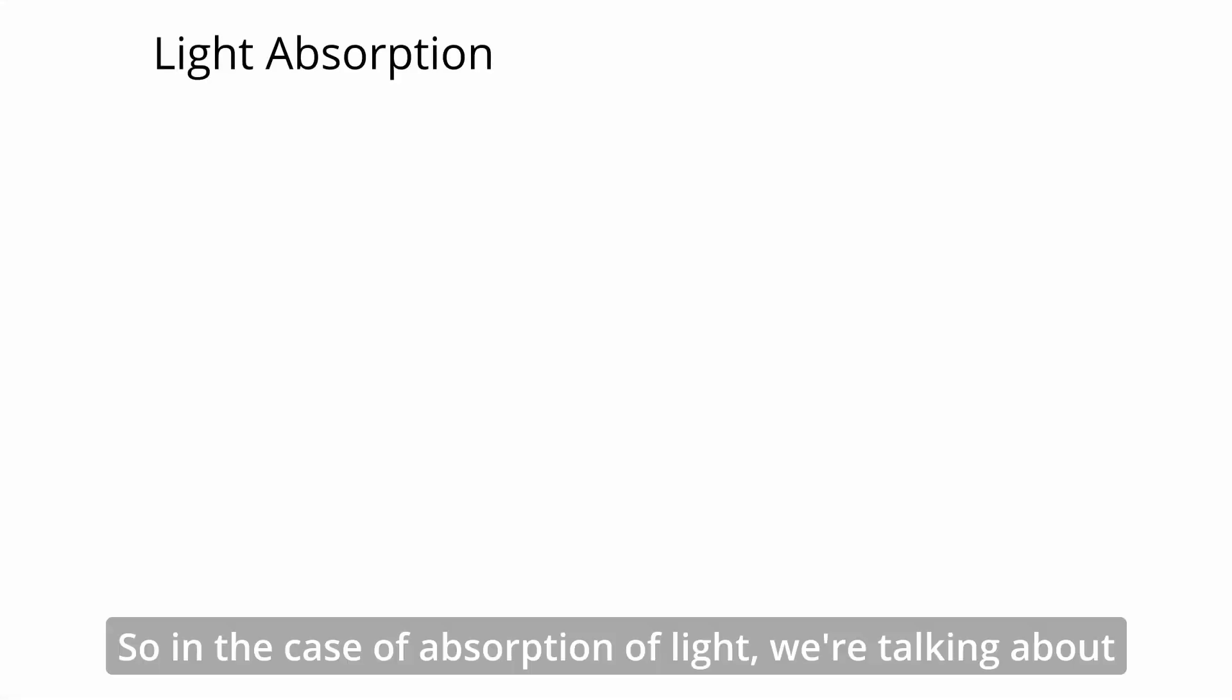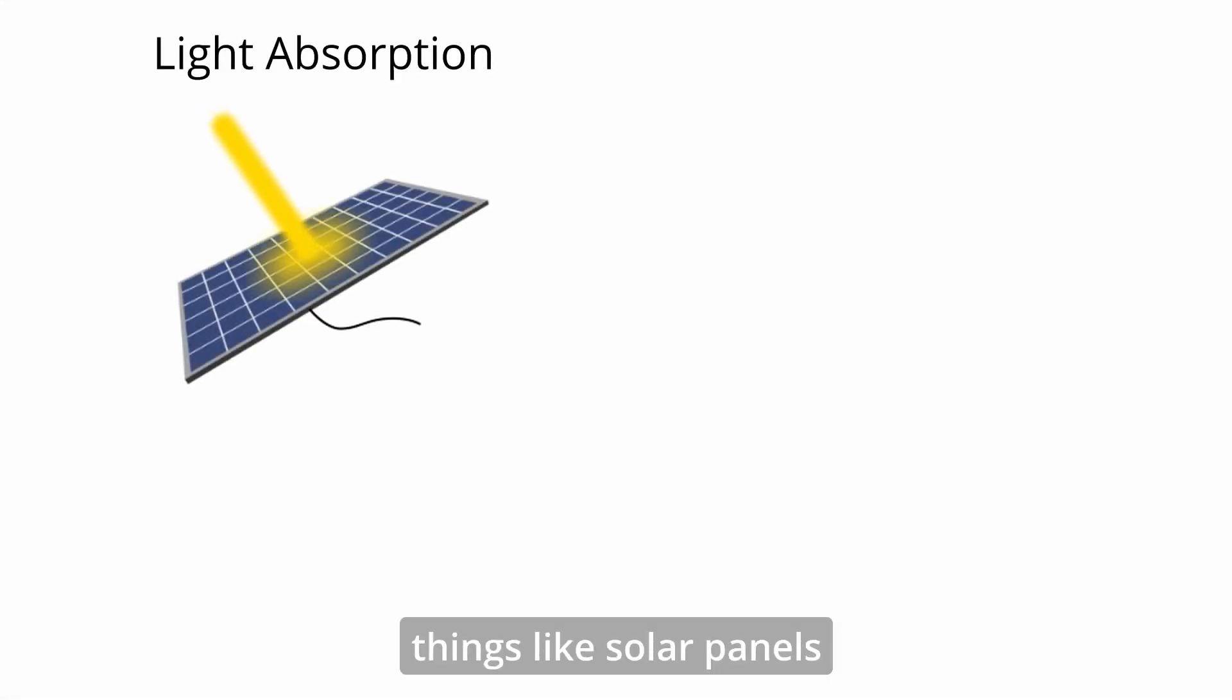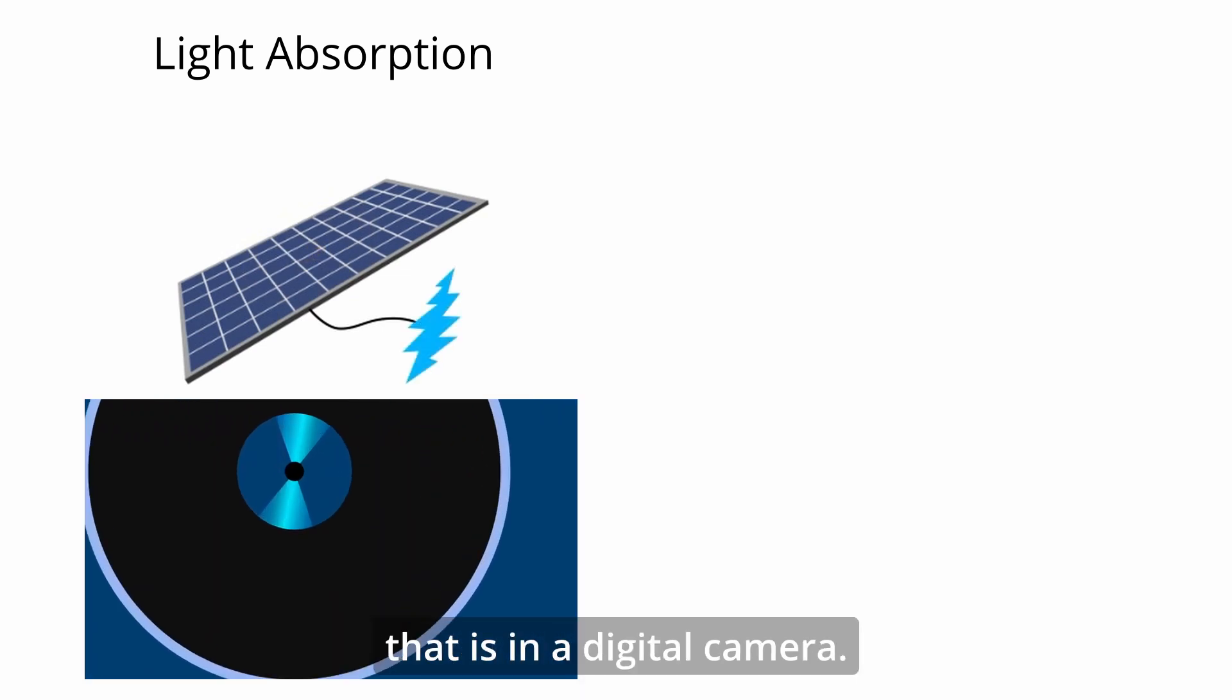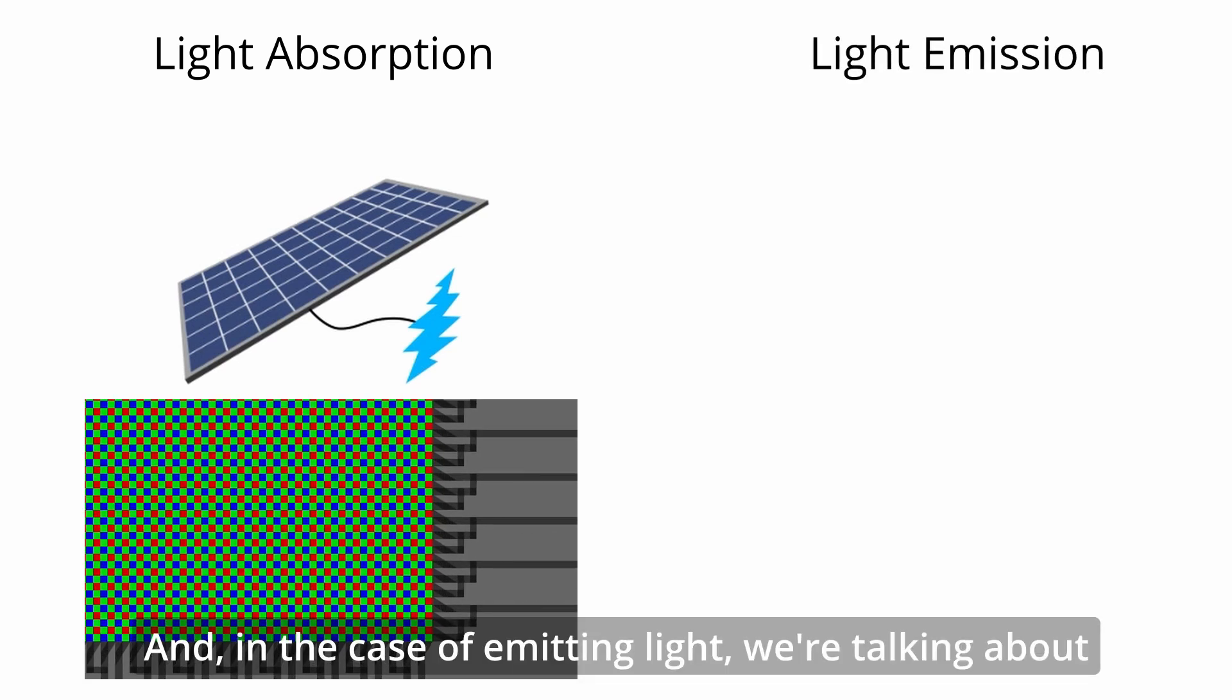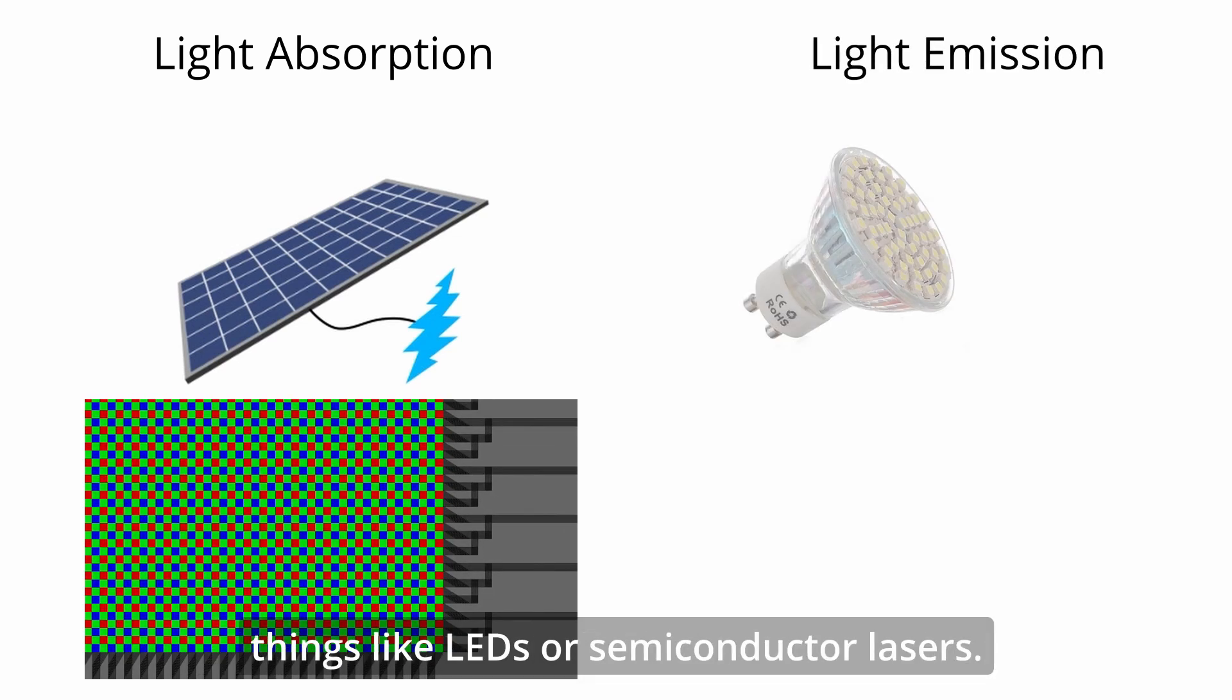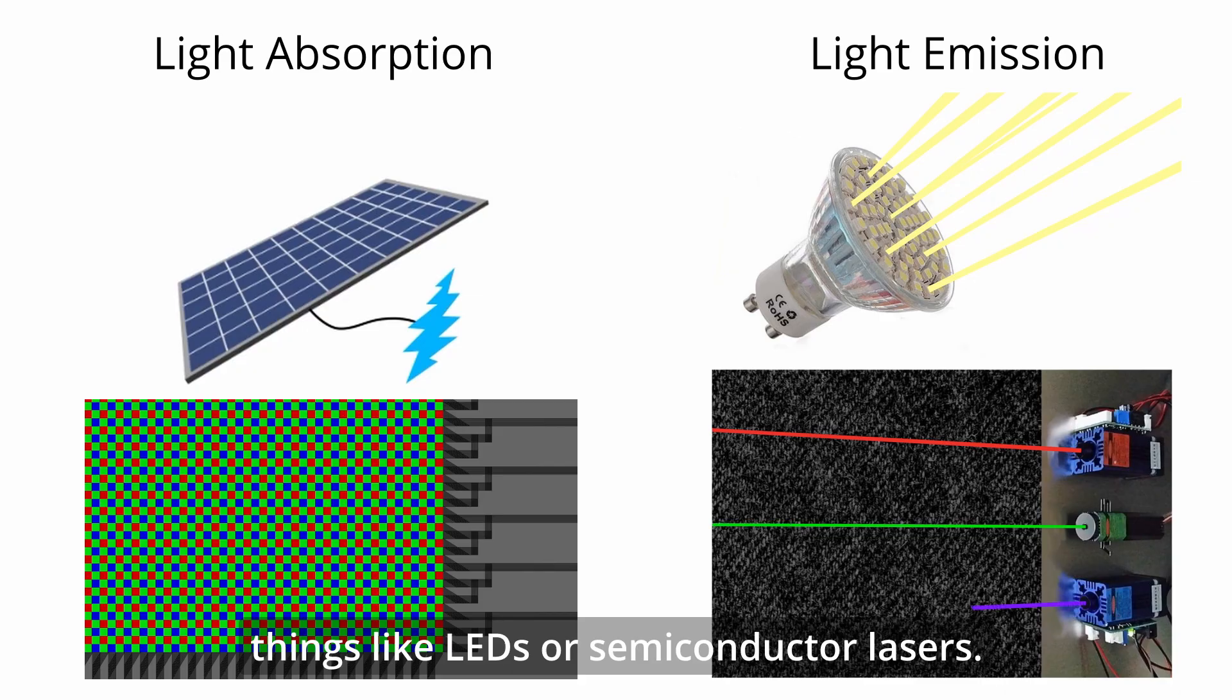So in the case of absorption of light, we're talking about things like solar panels and detectors or each and every pixel that is in a digital camera. And in the case of emitting light, we're talking about things like LEDs or semiconductor lasers.